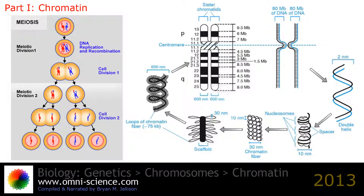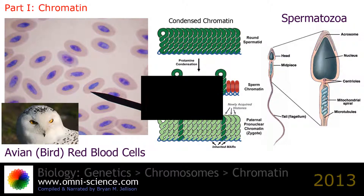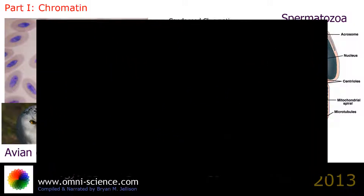There are, however, many cells which do not follow this organization. For example, spermatozoa and avian red blood cells have more tightly packed chromatin than most eukaryotic cells, and trypanosomatid protozoa do not condense their chromatin to visible chromosomes for mitosis.